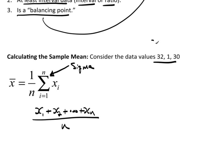So in this case, consider the data values 32, 1, and 30. Well, in the order that's written here, x1 would be 32, x2 would be 1, and x3 would be 30. So obviously in this case n equals 3.